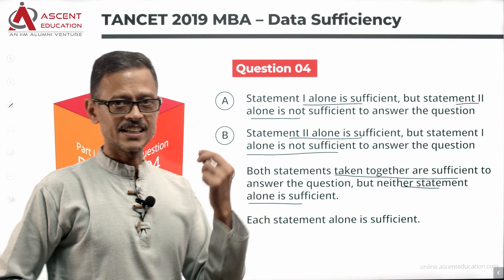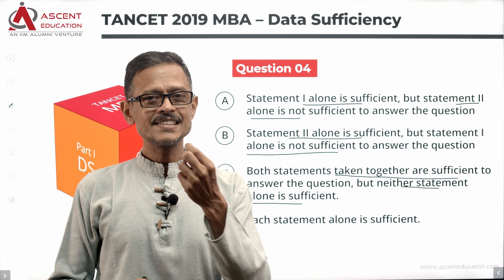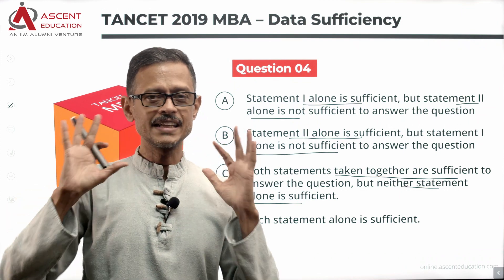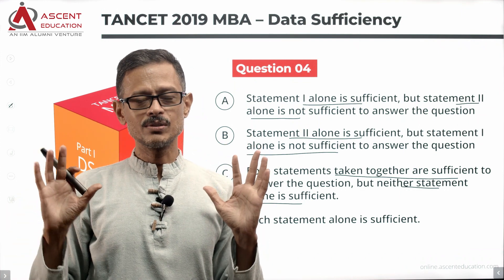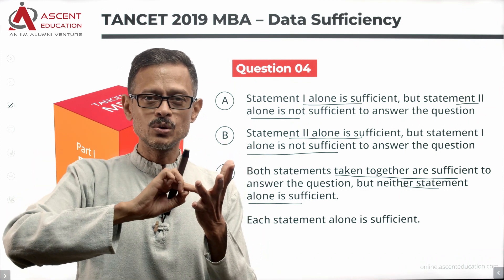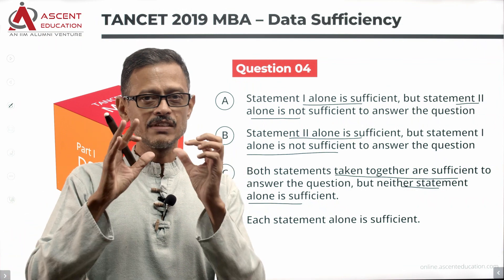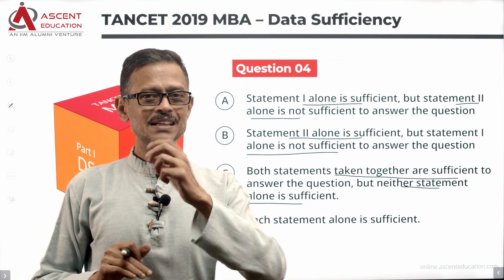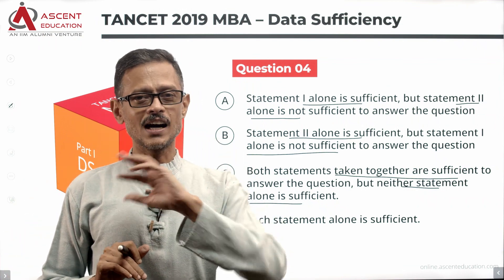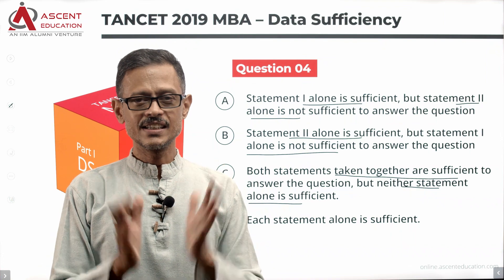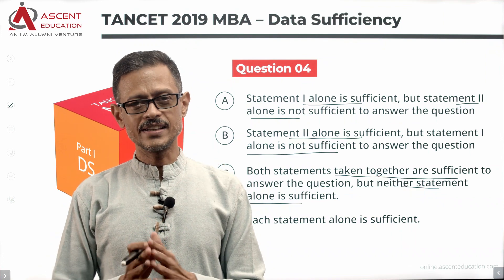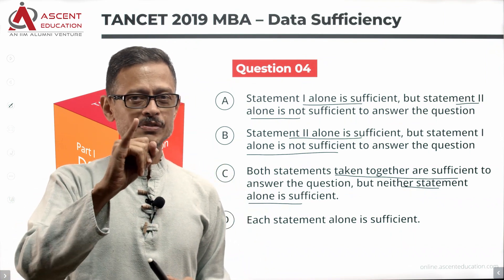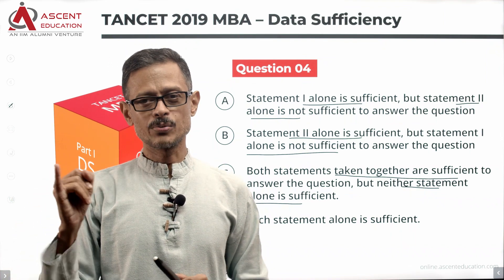Answer option D is an interesting one — each statement alone is sufficient. That means statement one is sufficient and statement two is also sufficient independently. Quick recap: one alone sufficient, two is not — answer option A.